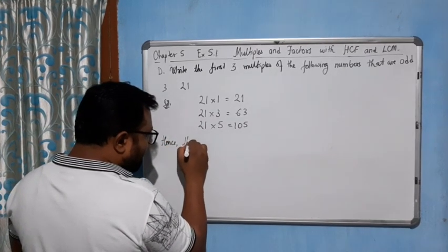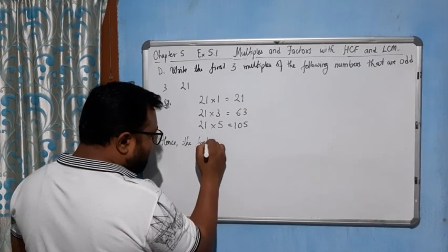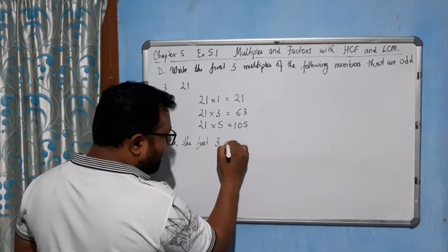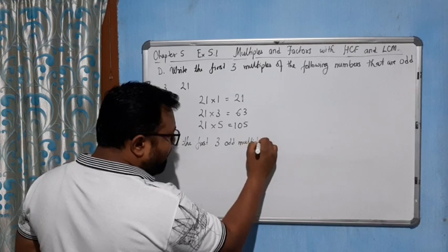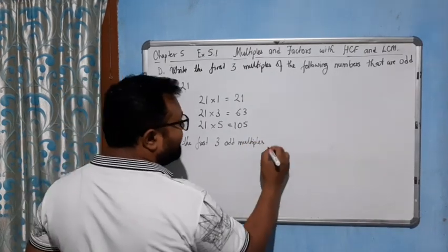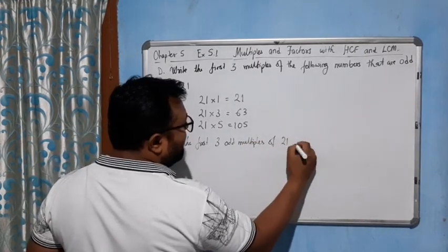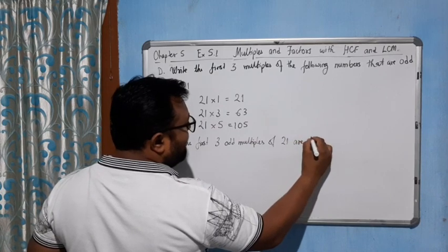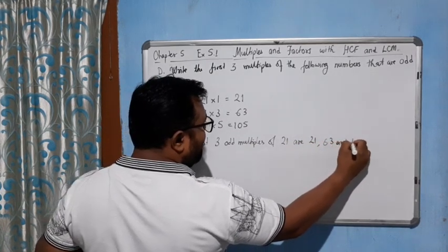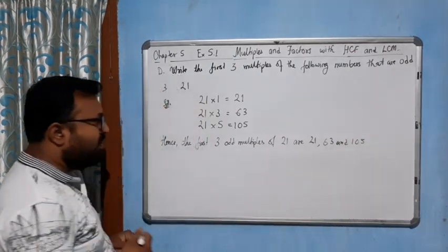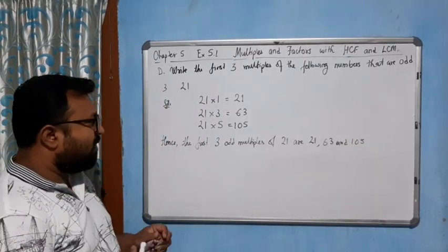Hence, the first three odd multiples of 21 are 21, 63, and 105.